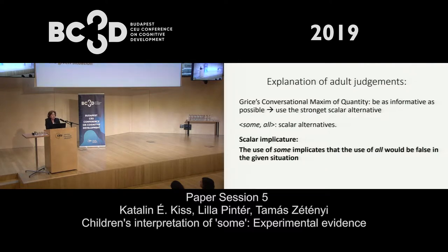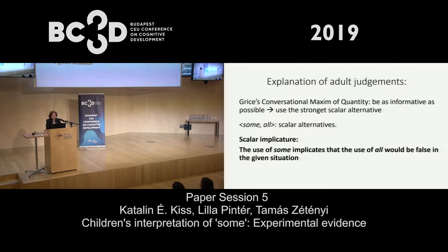Human discourse is regulated by conversational maxims, and the maxim of quantity says that we should be as informative as possible. So in the case of scalar alternatives, like 'some' and 'all,' or 'two' and 'three' and 'four,' we have to use the strongest alternative possible. So if an adult hears 'some,' he will implicate — he will assume that this is the strongest possible alternative — so 'some' is only used when the use of 'all' would be incorrect. This is the so-called scalar implicature.